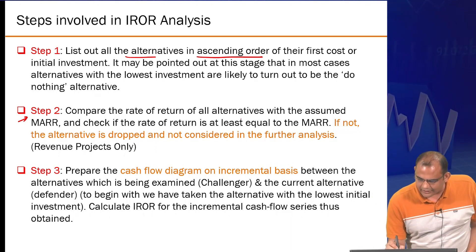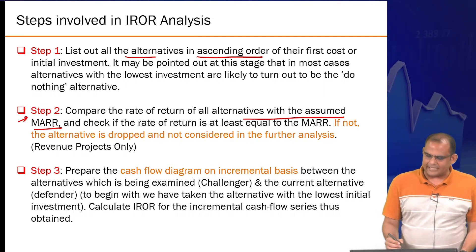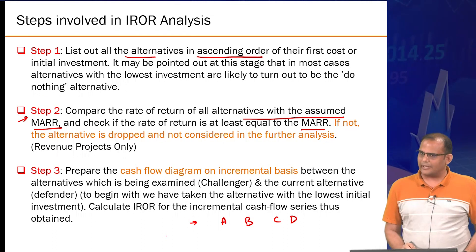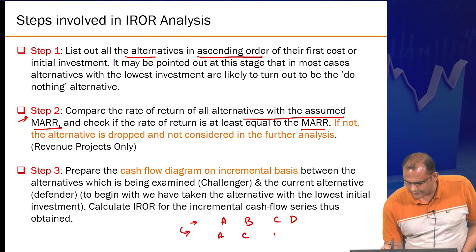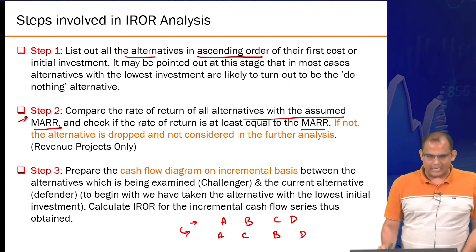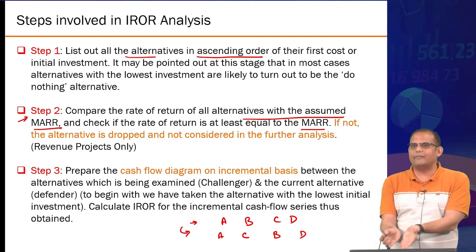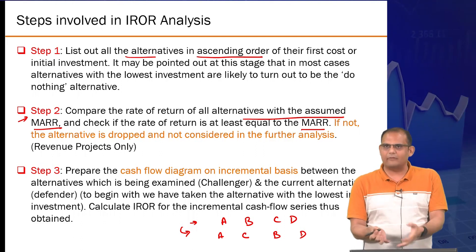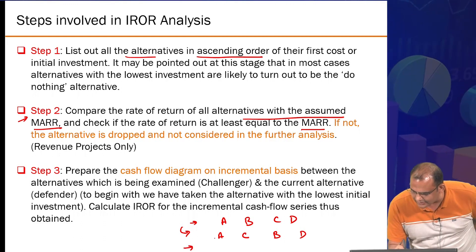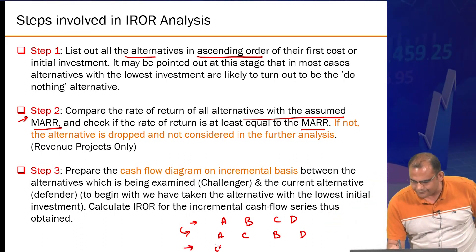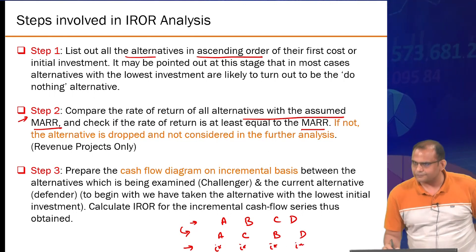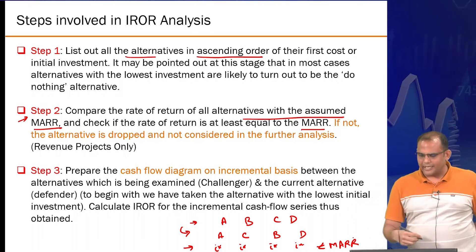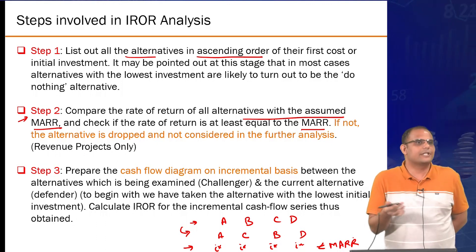Next, compare the rate of return of all individual alternatives with the assumed MARR and check if each rate of return is at least equal to MARR. After rearranging alternatives A, B, C, D in order, the first criterion is whether each individual project makes financial sense. If one alternative is loss-making, why bother comparing it with others? Based on the cash flow series of A, B, C, D, estimate their I* values. If any I* is less than your MARR, immediately eliminate that option from comparison.